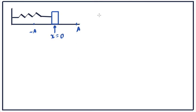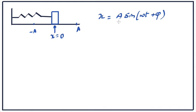Simple harmonic motion is described by this equation: X is equal to A sine omega t plus phi. X equal to 0 corresponds to the equilibrium position. The maximum value of sine is 1, when x equals A — that is the maximum displacement of the block from equilibrium. The minimum value of sine is minus 1, so the minimum displacement is minus A. The block oscillates between plus A and minus A. A is called the amplitude.